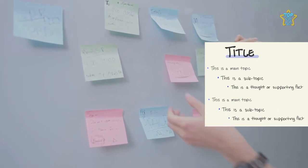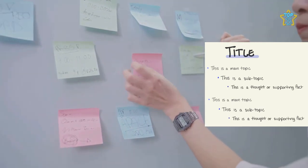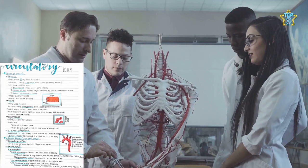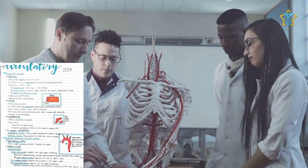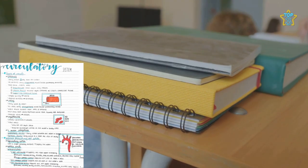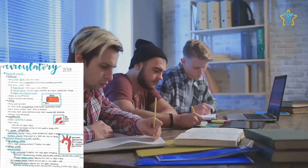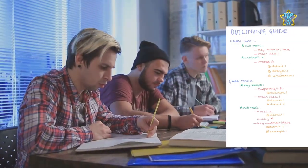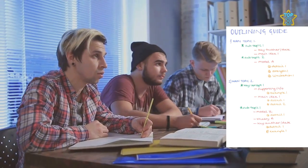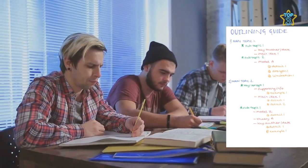Imagine you're studying the human body. Your main topic could be the circulatory system. Underneath this, you'd have subtopics like the heart, blood vessels, blood flow. Within these subtopics, you can add more details. It's a clear, linear approach that works wonderfully when the lecture content is heavy and well-organized.